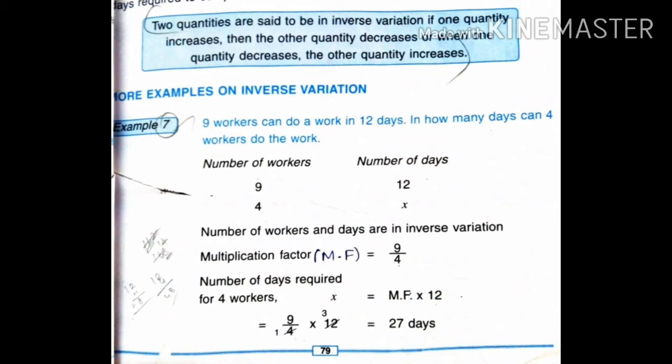Example: Nine workers can do a work in 12 days. In how many days can four workers do the same work? So first, 9 workers finish one work in 12 days. Then for four workers, how many days will it take to complete the work? This is an inverse variation method — number of workers and days are in inverse variation.